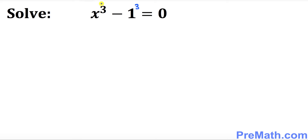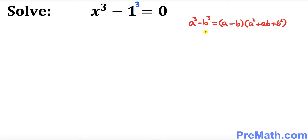So now we will be using this factoring formula — the difference of two cubes. In our given example, x would be treated as a and 1 is going to be treated as b.